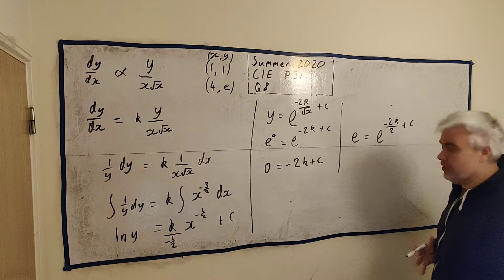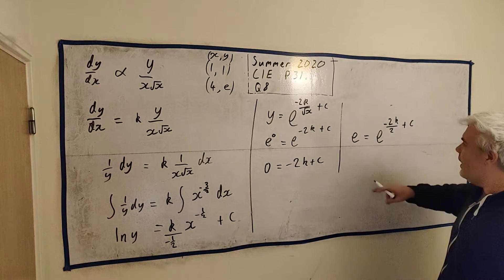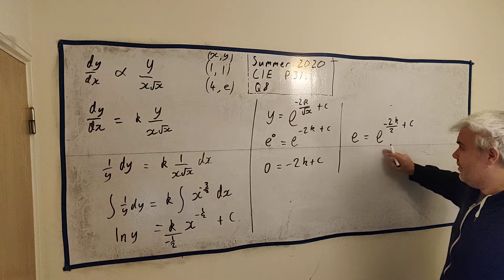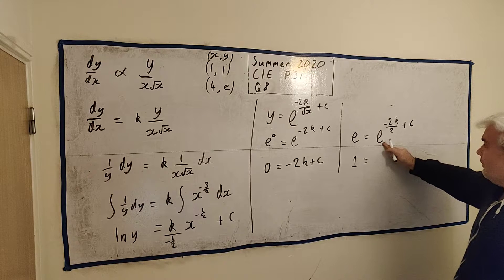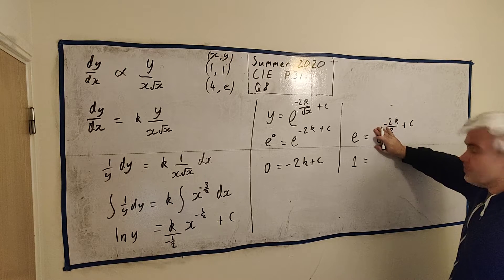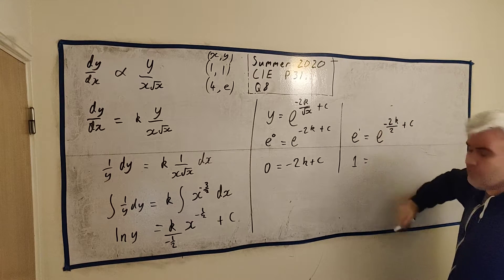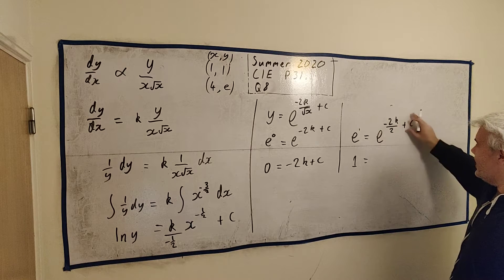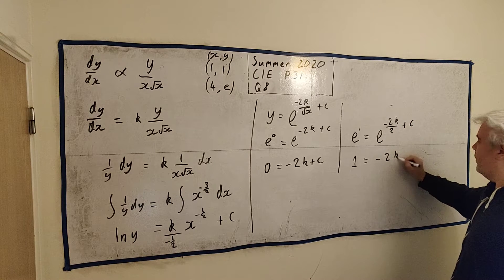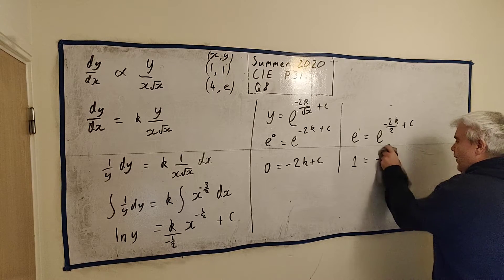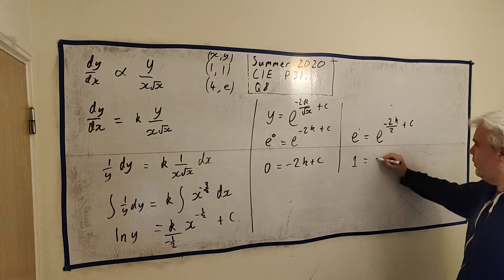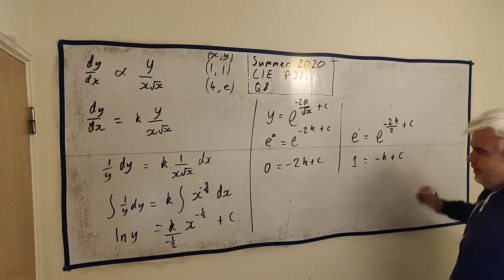A more formulaic way to do it. A more way a computer could do it. Or a student often likes to learn to do it. Is just take the natural log of both sides. The natural log of e is 1. Is equal. The natural log of e, again, is 1. It just destroys it. Destroys the e and leaves what's up here. Minus 2k over 2. 2 divides into 2. It's minus k plus c.